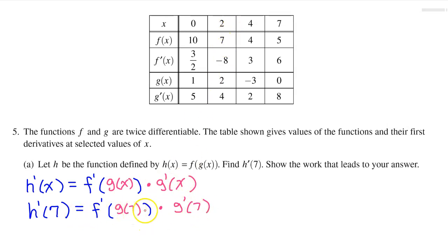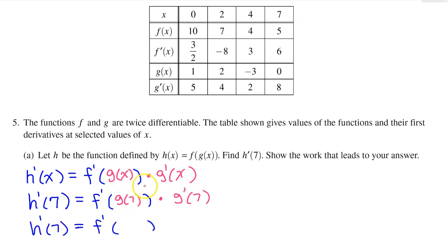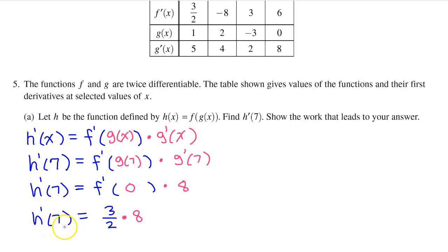We just need to use the table to evaluate from the inside out. According to the table, g at 7 is 0. And we are going to multiply by g prime at 7, which is 8. So now we need to find f prime at 0. And according to the table, f prime at 0 is 3 over 2. So h prime at 7 equals 3 over 2 times 8. You could stop here. Or you could simplify and put h prime at 7 equals 12.